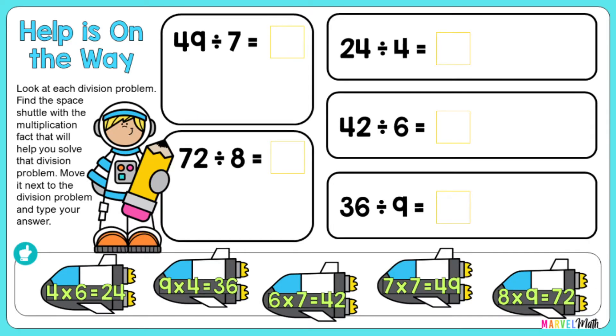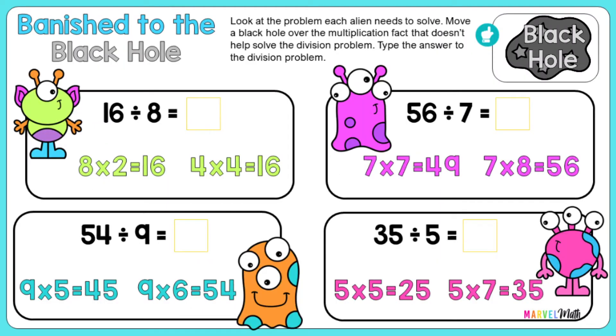So you'll have another slide where you'll do the same thing. And then we're going to do this one. So all of these aliens have a division problem to solve. Now there are multiplication facts below them, and we need to figure out which one will help us solve that division problem. So 16 divided by 8 equals something.